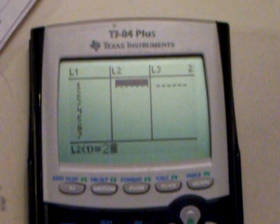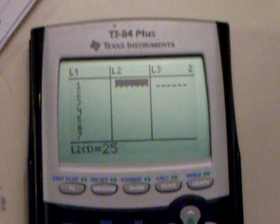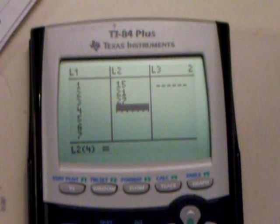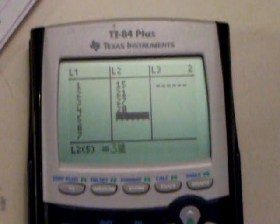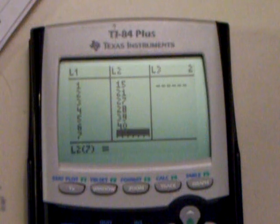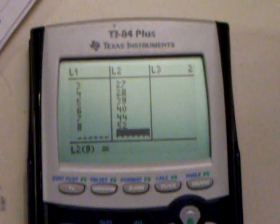And then go over and just 15, 21, 27, 28, 39, 40, 44, and 52. Okay?